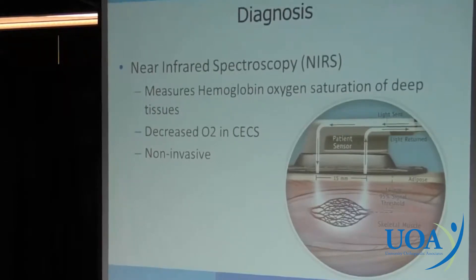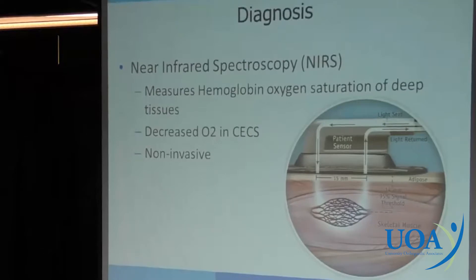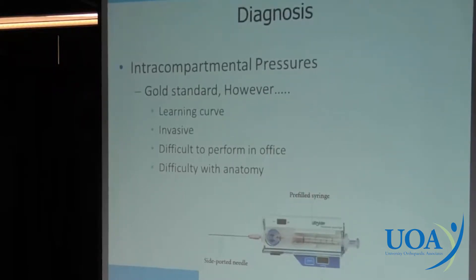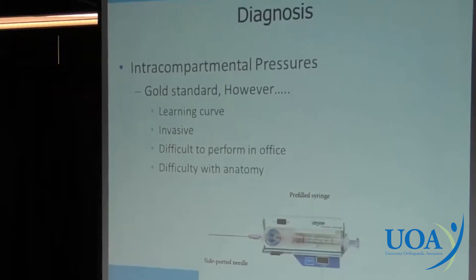Near-infrared spectrometry is a relatively new technique. It's also nice because it's non-invasive — all you're basically measuring is oxygen saturation. You have your patient work out, put this sensor on their leg, and you'll see a decrease in oxygen saturation in the deep muscles. However, the gold standard is still the Stryker catheter, with an 18-gauge needle. Patients would go run around the park, come into the office, and then you put this needle into their legs. It's invasive, it's painful for the patients, and there's a serious learning curve — it takes some time to really get used to. But it is still the ultimate diagnostic gold standard.